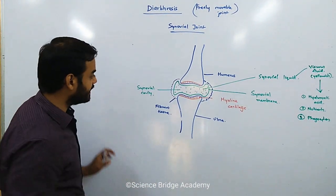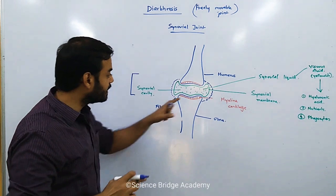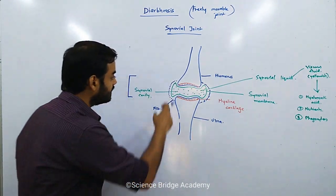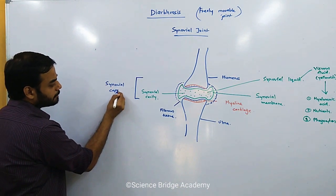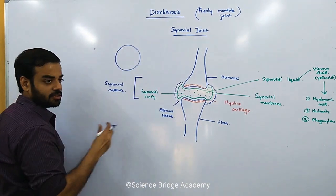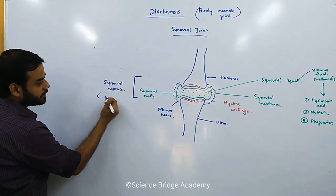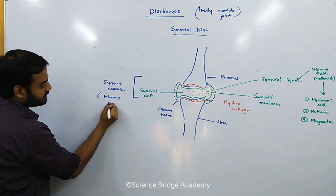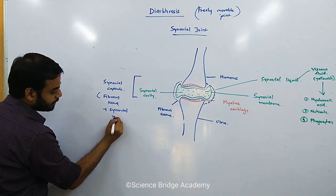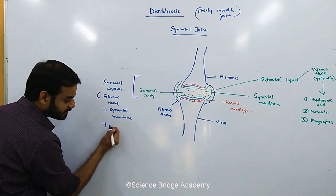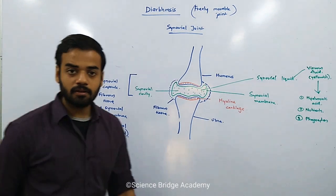The synovial capsule is made up of three components: fibrous tissue, synovial membrane, and synovial fluid. Note that cartilage and bones are not included in the synovial capsule — only these three parts together form it. The capsule is a closed structure that encloses the joint.